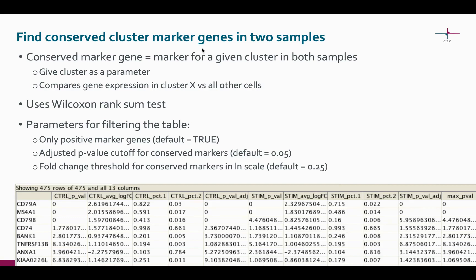Conserved cluster marker genes mean genes that are differently expressed in that particular cluster in both samples. Here, like in the one-sample analysis, we are always comparing the cluster of interest to all the other cells in the dataset. A statistical test known as the Wilcoxon rank sum test is used here, and the result table looks something like this.